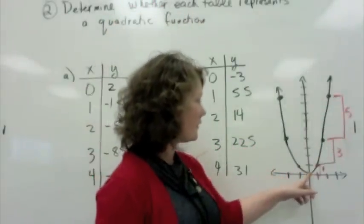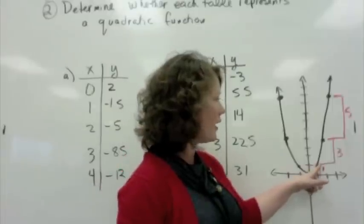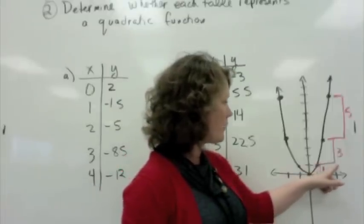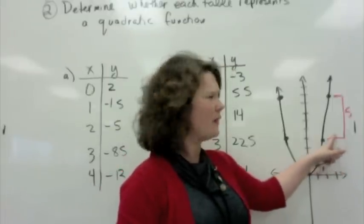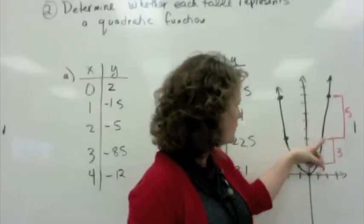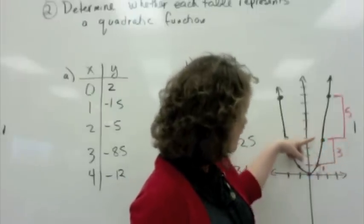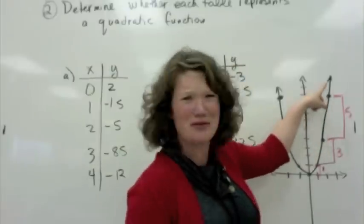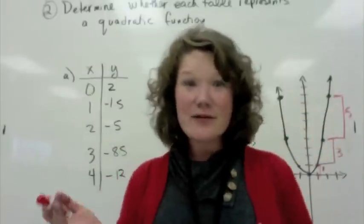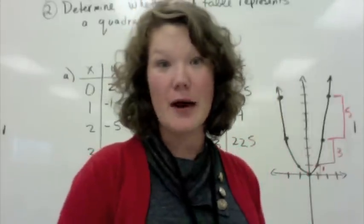Whereas this is different. You run 1, you rise 1. You run 2, you rise 3. Sorry, you run 1 and you rise 3. You run another one and you rise 5. So, there's a difference in slope in a parabola.